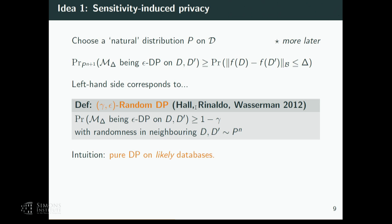Random differential privacy is due to Hall, Rinaldo, and Wasserman, then at CMU. The idea is to say we've got randomness in the data now — it's a little bit like puffer fish in that sense. The mechanism is likely to have pure DP with randomness in the data. There's certainly randomness in the mechanism for epsilon DP, and then it's wrapped around with randomness in the data. We've got some confidence given by gamma, but what affects our confidence is also the choice of distribution.